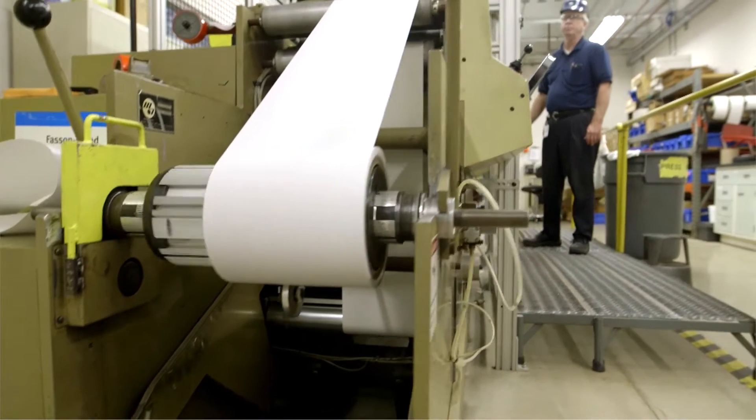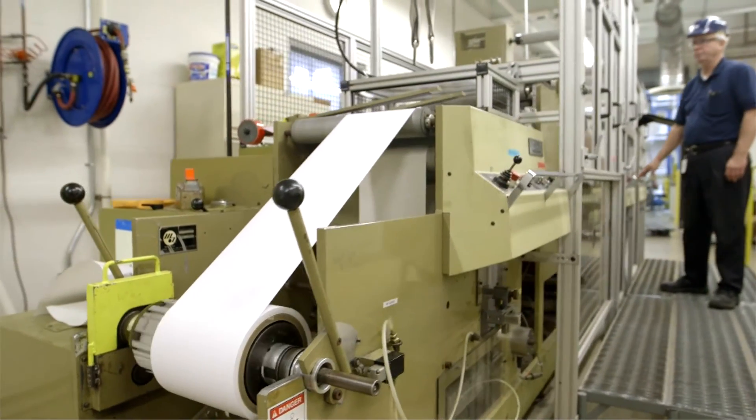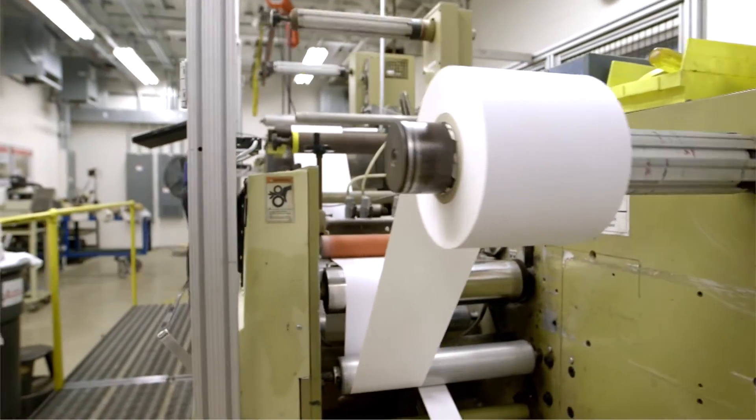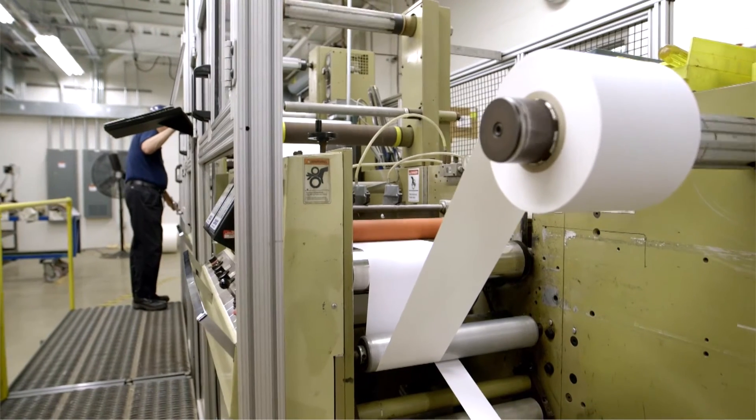One other way we test product performance is in our converting room. We can test sheeting, fan folding, and backside hole punching on a finished product label.